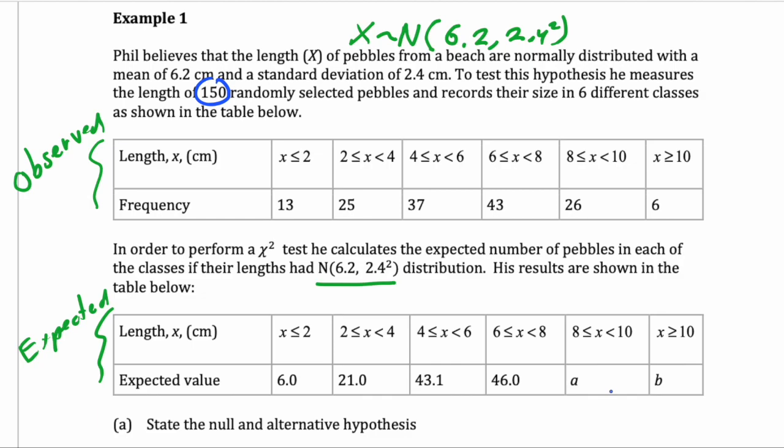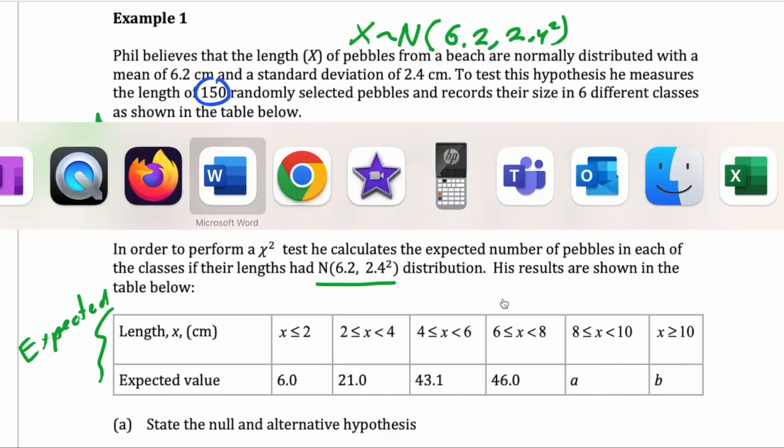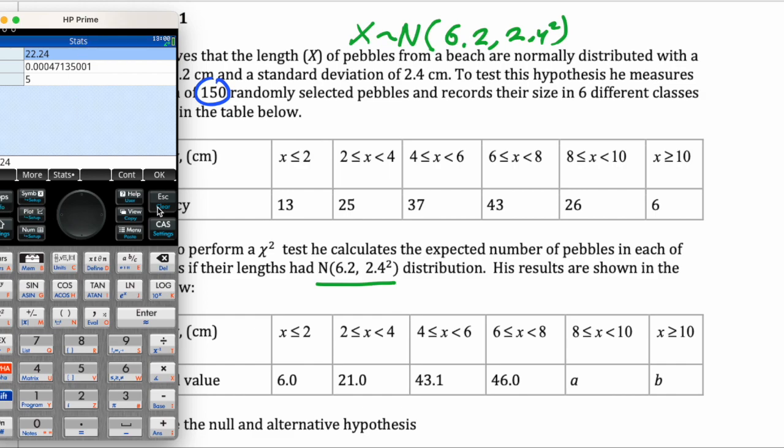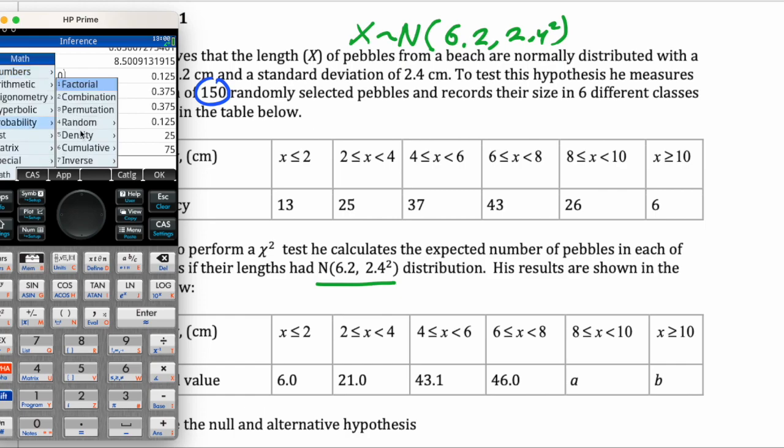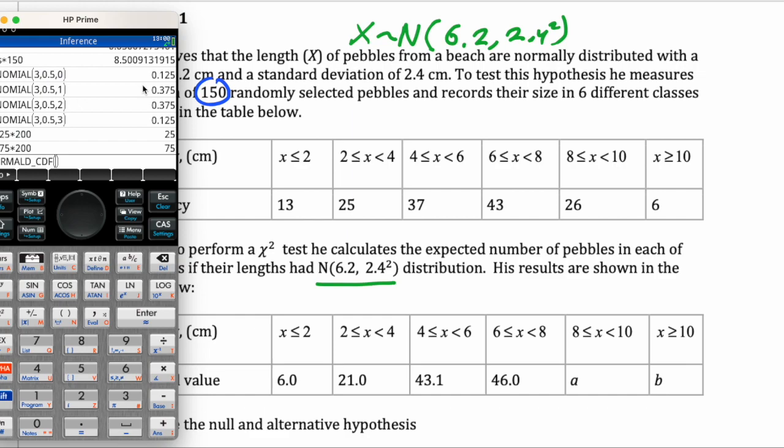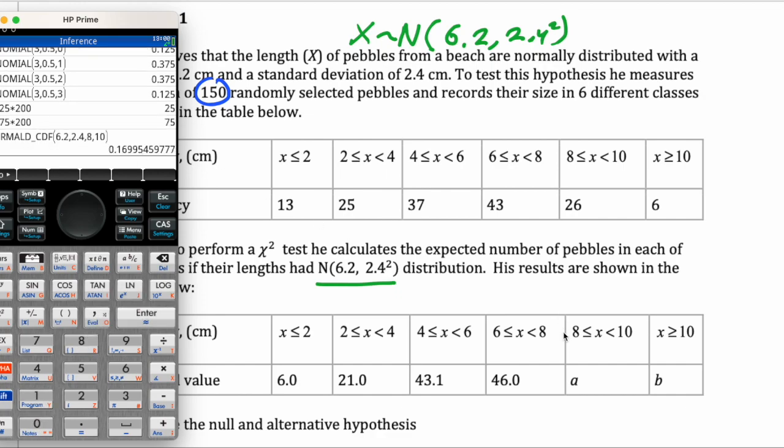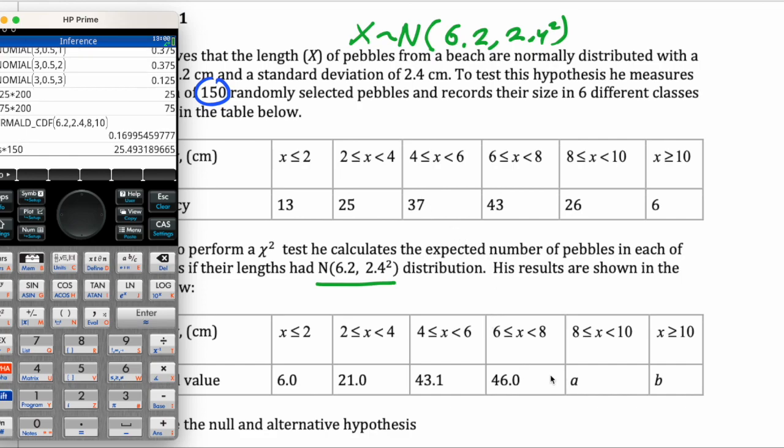So most of it's done for you. I'm going to finish the last two, so we can get normal probabilities in our calculator. If I go to the toolbox, probability, use cumulative for these normal probabilities, and we want between 8 and 10, so we type in the mean, standard deviation, 8 and 10. So you put all that in, click enter, that's the probability of a pebble being between 8 and 10 centimeters. So to get the expected value, we multiply by 150, and we press enter, so that's 25.5.